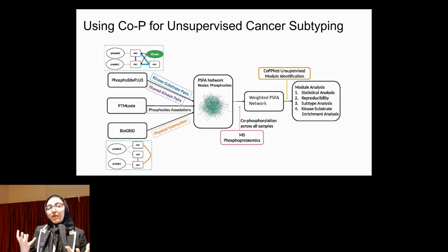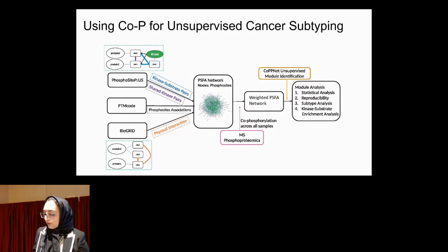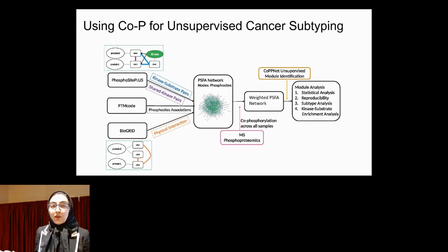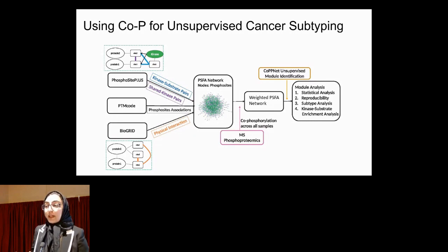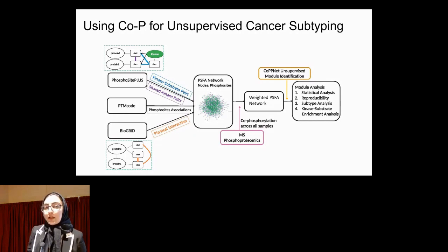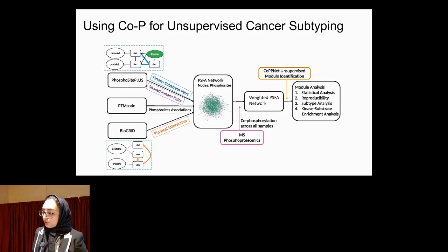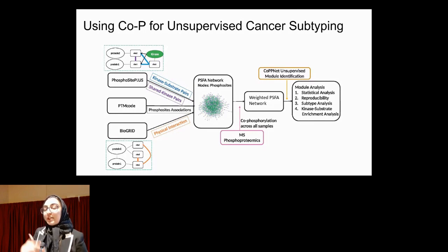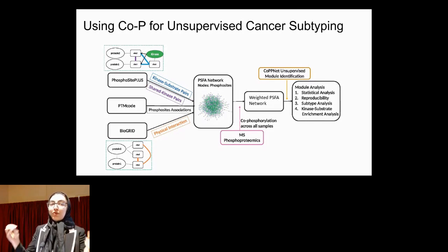After identifying these modules — without using any cancer subtype information, making this entirely unsupervised — we evaluate whether the identified modules are statistically significant and not identified randomly, whether they are reproducible across different independent datasets, and whether they are associated with any subtypes. We also perform kinase-substrate enrichment analysis to identify any hyperactivated kinases. The premise is that phosphosite pairs whose phosphorylation relates to a specific cancer subtype will exhibit co-variation across samples, so co-phosphorylation can highlight those cancer-specific modules.